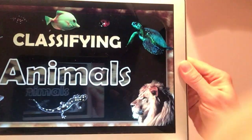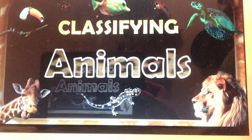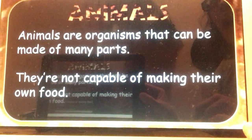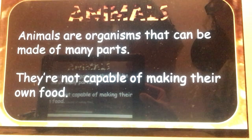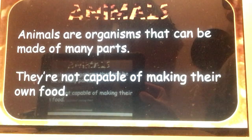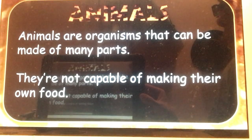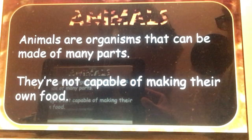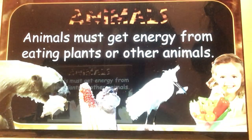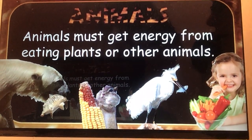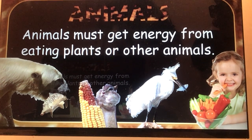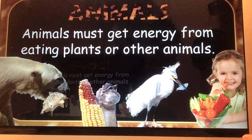I'm going to switch over to my presentation now, so you'll hear my voice but only see the slides. We're going to talk about classifying animals. Animals are organisms that can be made up of many parts. The biggest thing that makes them part of this kingdom is that they are not capable of making their own food. The only way they can get energy is by eating another plant or animal — they cannot use photosynthesis.